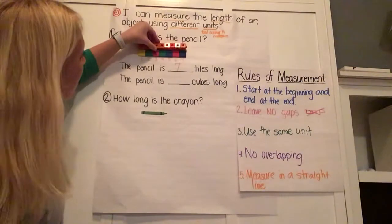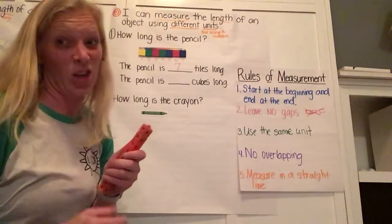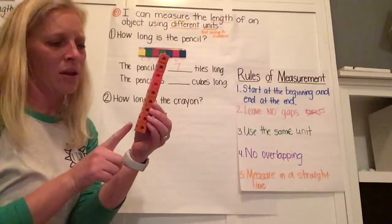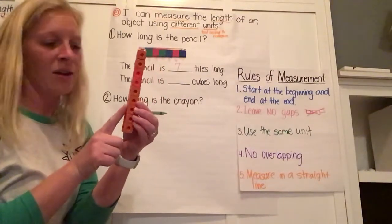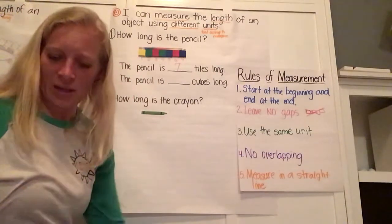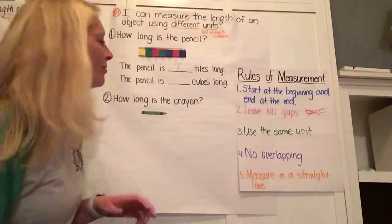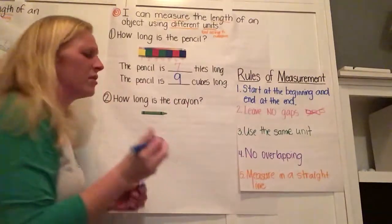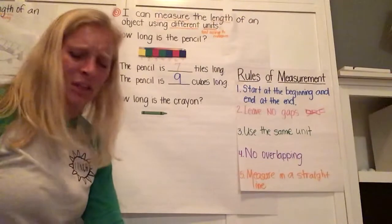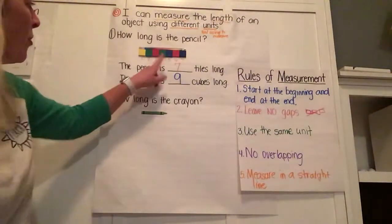How many cubes long? What I like about the cubes is they stick together and then I can count them easier. How many cubes do I have? Let's count them. One, two, three, four, five, six, seven, eight, nine. Nine cubes long. I'll use a different color. So it's seven tiles, but nine cubes. Hmm. Interesting. Why do you think I have a different number in those?